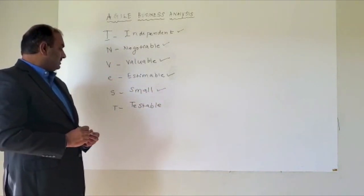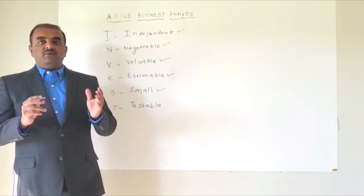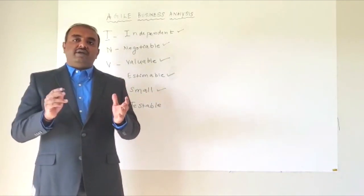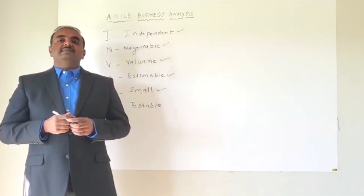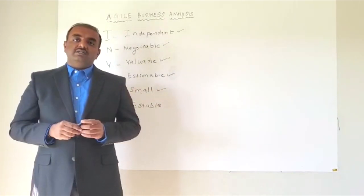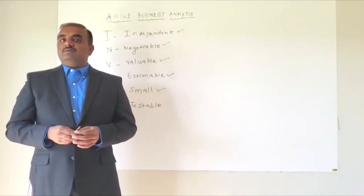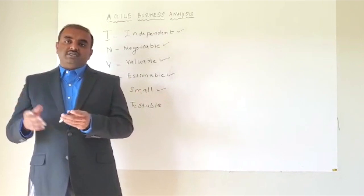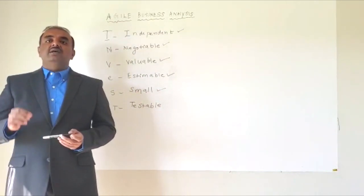So the final attribute is Testable. We need to make sure every story that we work on has to be quantified. When I say quantified, let me take an example. As a customer, I should find the system very easy to use. So if you see the story, the problem here is easy to use could be different for each person. So in these scenarios, you have to write a story so that it's very quantified. When I say quantified, as a customer, I should be able to complete this action within two seconds.